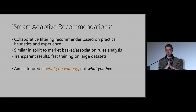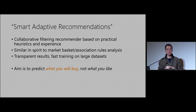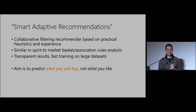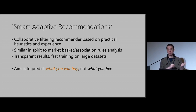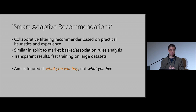Collaborative filtering means you use data from multiple users to make a recommendation for a specific user. So maybe if lots of different people liked this particular movie, you might recommend that. Or you might say: if this person likes this movie, and all these other people also like it and liked another movie, then you recommend that other movie as well.